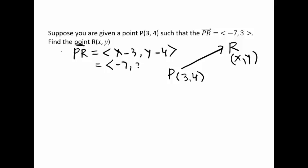So then clearly we know that x minus 3 is negative 7, that means x is negative 4 if you add 3 to both sides. And y minus 4 will be equal to 3, so you can say y equals 3 plus 4 which is 7.